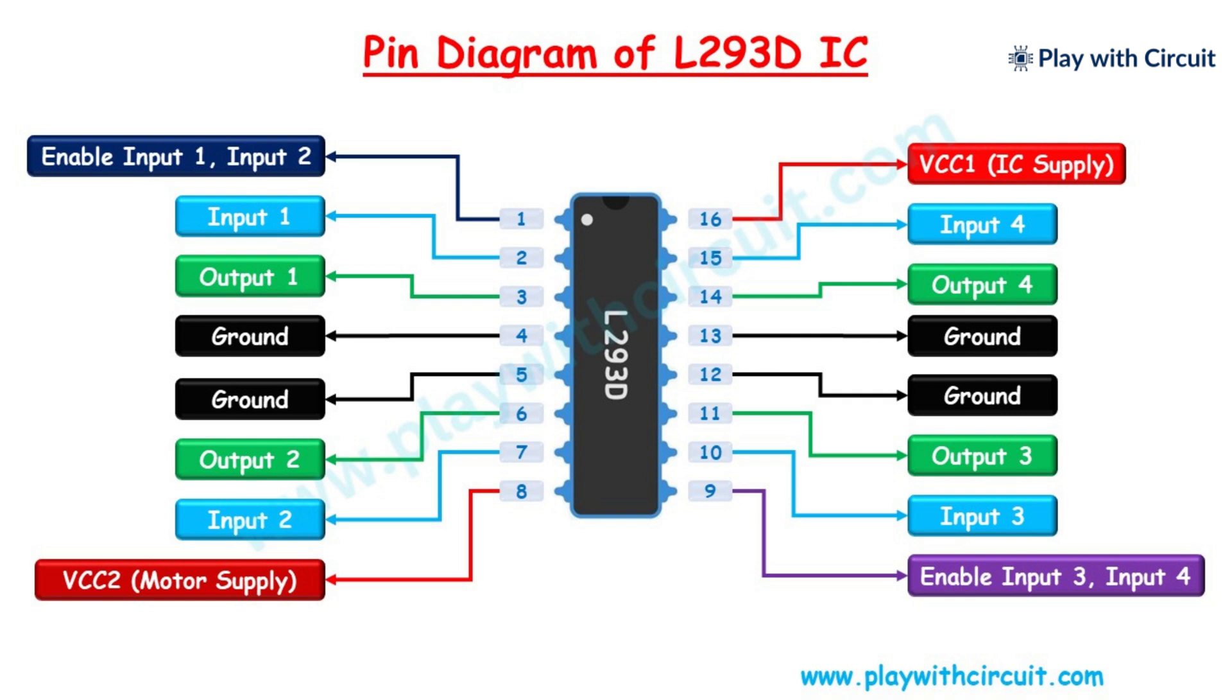The L293D is a dual H bridge circuit motor driver IC that allows you to control the direction and speed of two DC motors. With this motor driver IC you can control two DC motors.